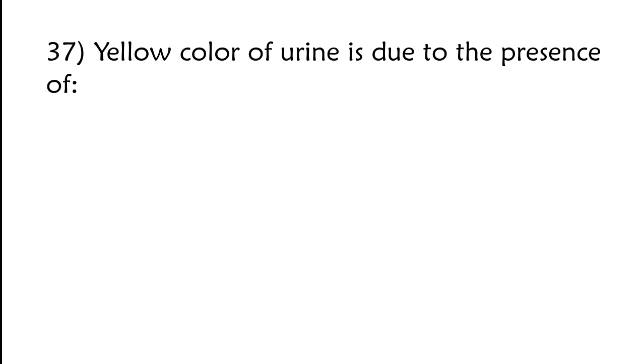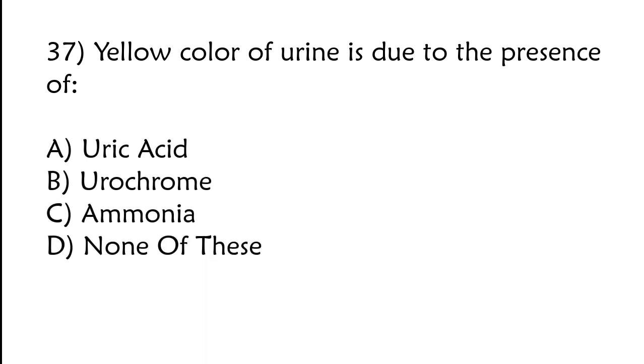Yellow color of urine is due to the presence of uric acid, urochrome, ammonia, or none of these. The correct answer is option B, urochrome.